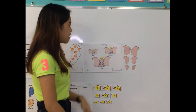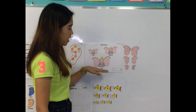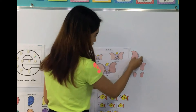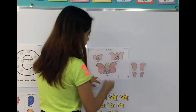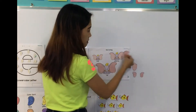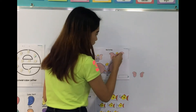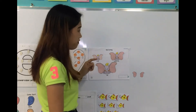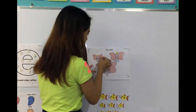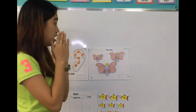Dumbo is an elephant and Dumbo needs help to find her ears. How about we find the big ears of Dumbo? How about we paste the big ears of Dumbo? How about the middle size? The middle size ears of Dumbo. This is the middle size ears of Dumbo. The big, middle size, and small.